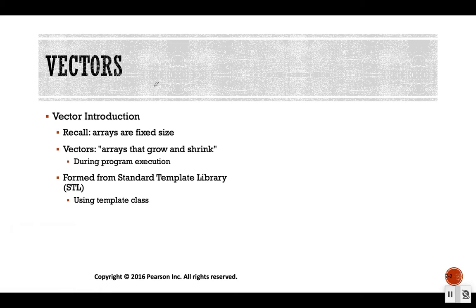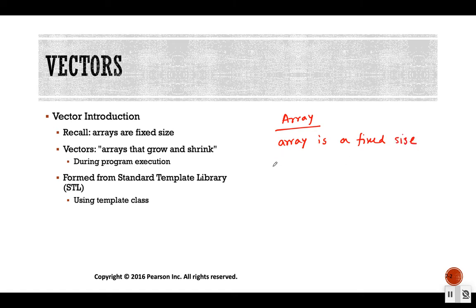We are going to use vector as an alternative to array. If you remember from our earlier discussion — the review of C++ — we talked about an aggregate data type, which was array. That was our first introduction to an aggregate data type. One major disadvantage of array is that when we declare an array, it is a fixed size. When we declare an array, we have to specifically mention the size — for example, declaring an array of size 50.